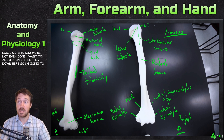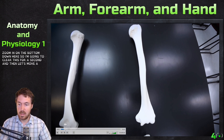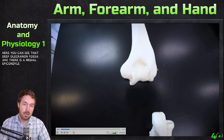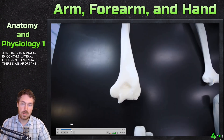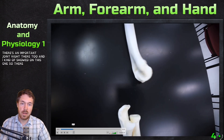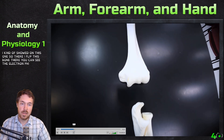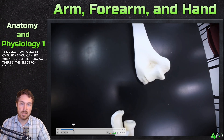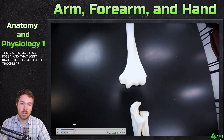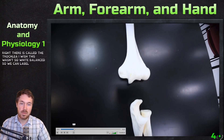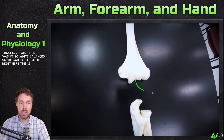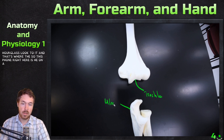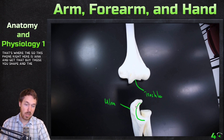Zooming in on the bottom of the humerus, you can see the deep olecranon fossa, the medial epicondyle, and the lateral epicondyle. Flipping the bone, you can see the olecranon fossa clearly, and next to it the joint called the trochlea — it has an hourglass look to it. The ulna, identifiable by its U-shape, articulates there at the hinge joint.